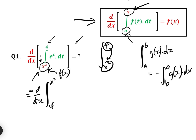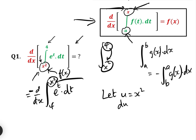Now we have x² at the top rather than x, so we need the chain rule. We let u equal x², and therefore du/dx equals 2x.